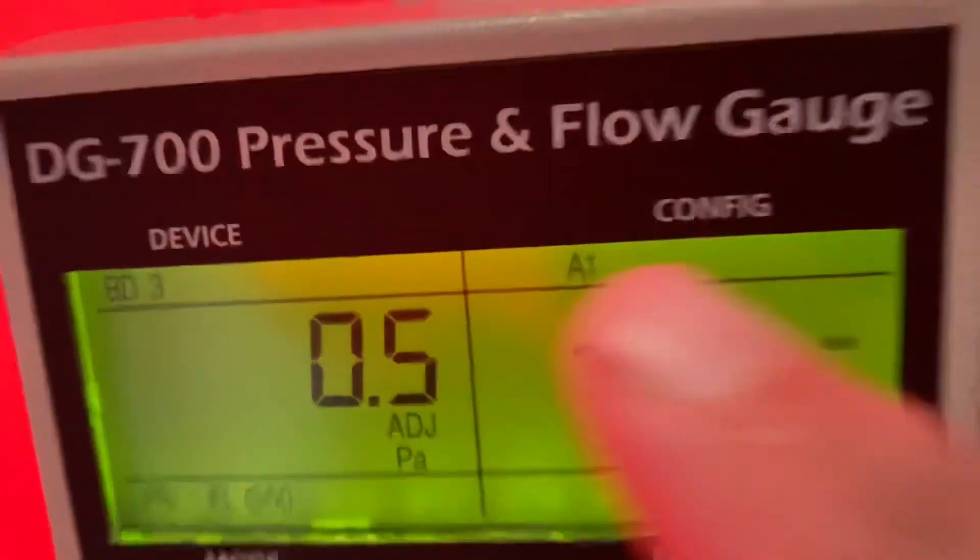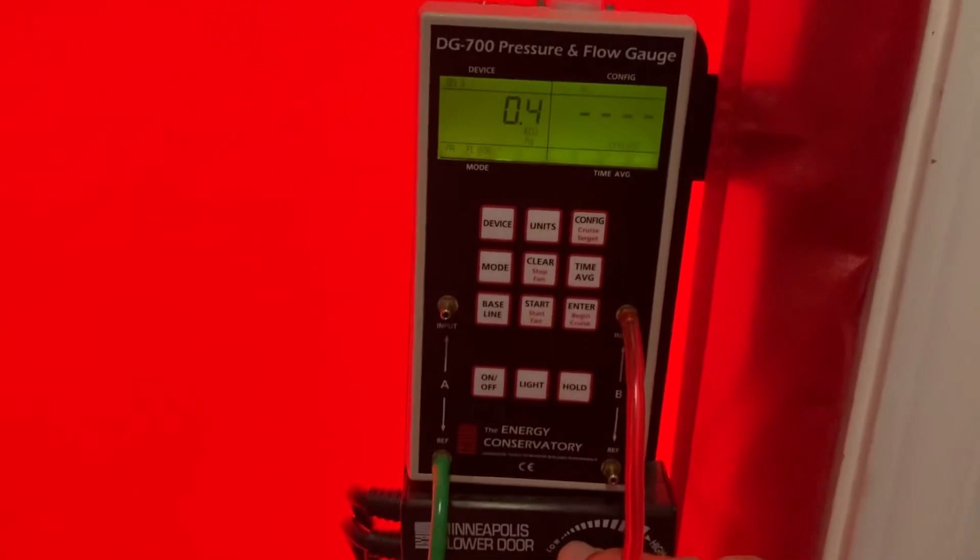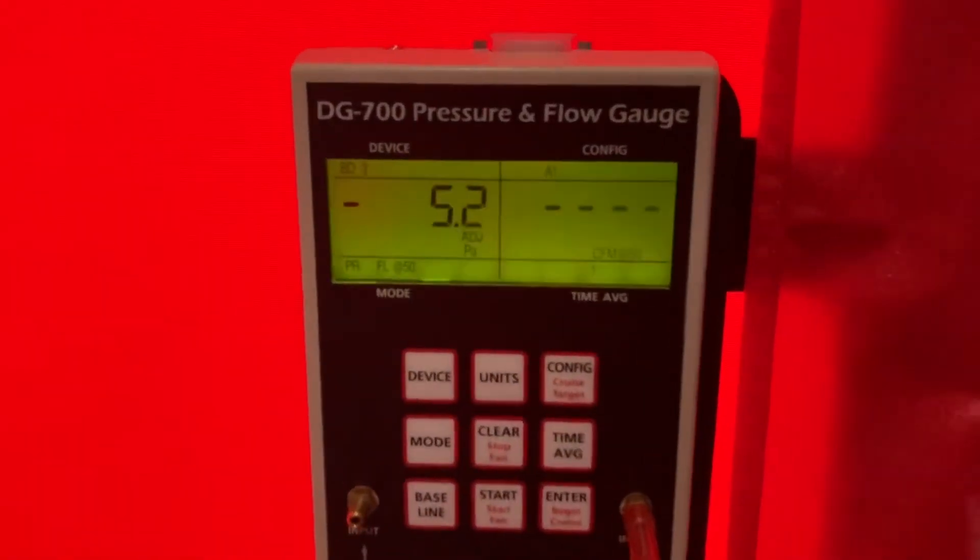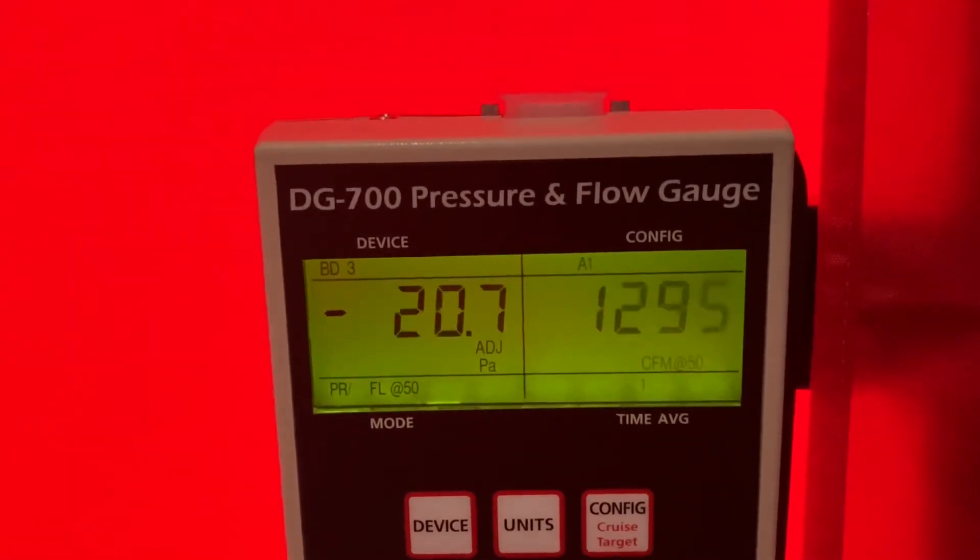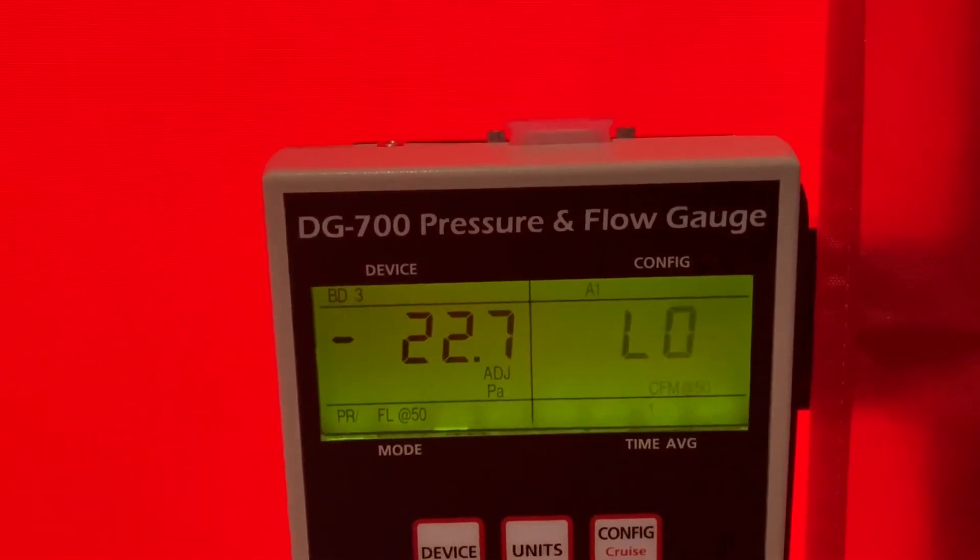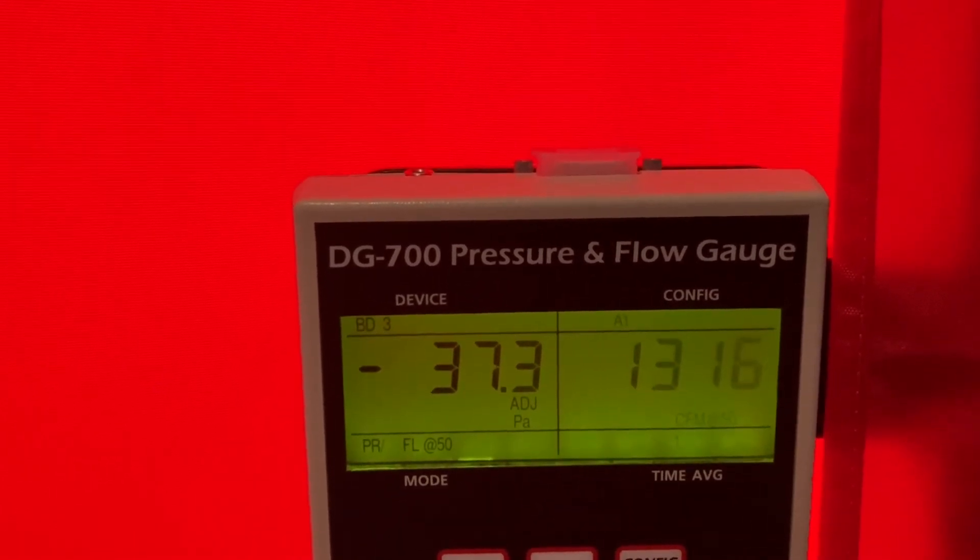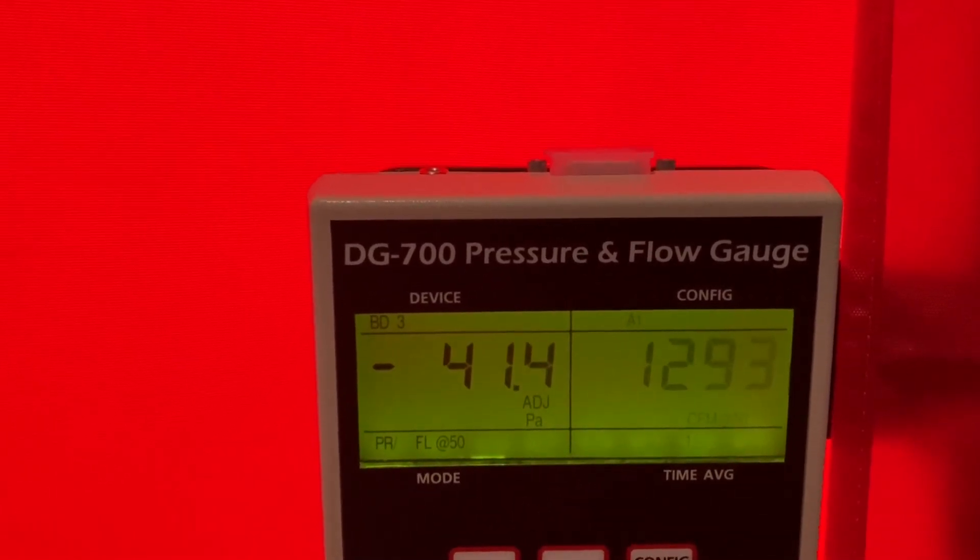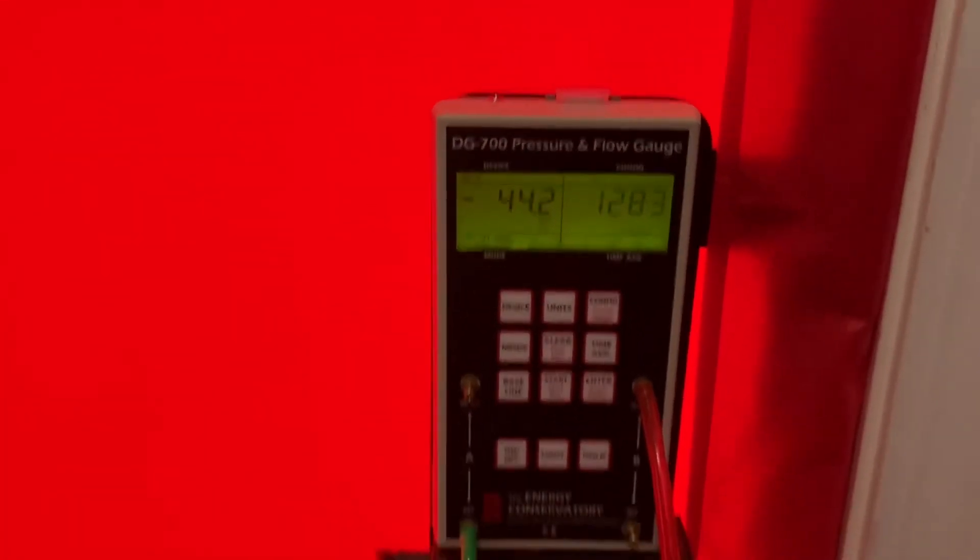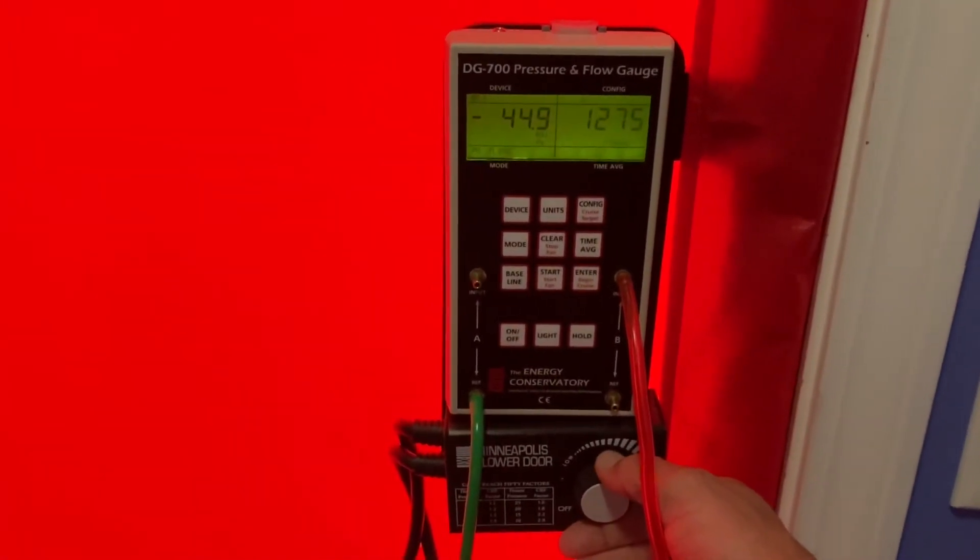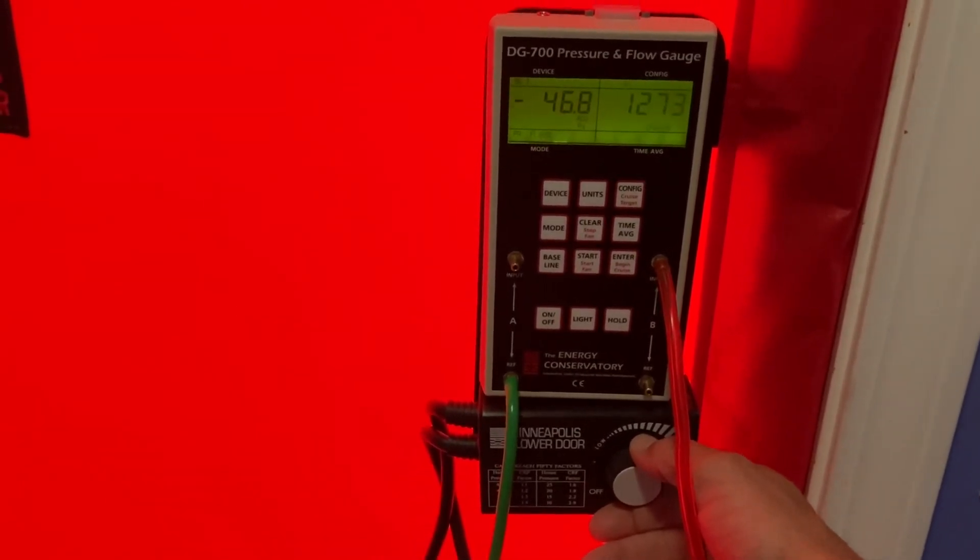From there we can go ahead and ramp the blower door back up to negative 50 and we should be able to get a new CFM at 50 number. Now it doesn't have to be exactly at 50—it can be negative 45, negative 51—that'll be close enough for what we do. It's running calculations in the background to make sure it's correct. And that is how you set up your DG-700 for a blower door test.